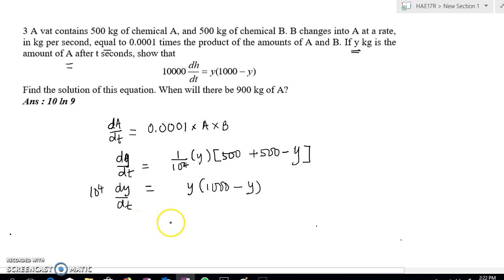The next step is just to solve the differential equation. Separate the variables, that will give you something like this: dY here, and then we have 1 over Y(1000 minus Y), and then put the integral sign, put 10 to the power of 4 outside, equals to dt integral.